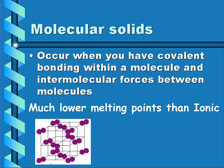A molecular solid occurs when you have covalent bonding within a molecule and intermolecular forces between the molecules. These have much lower melting points than ionic solids because you are breaking intermolecular forces, not covalent bonds, and intermolecular forces are much weaker than an actual bond.